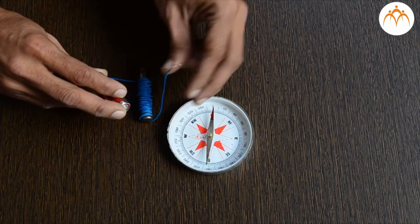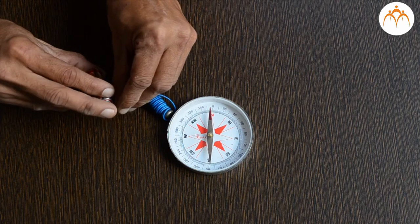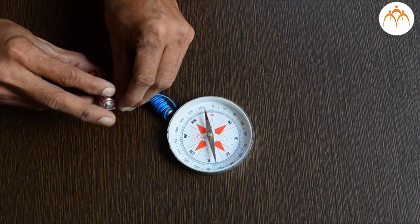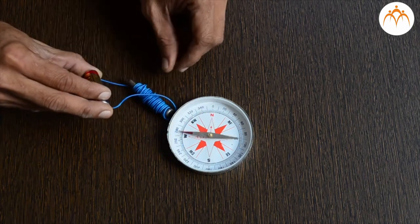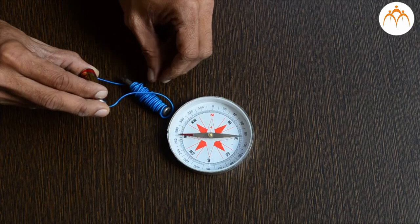The nail we used becomes a magnet for a short time. Did it also have a north and south pole just like a regular magnet? How will you verify?